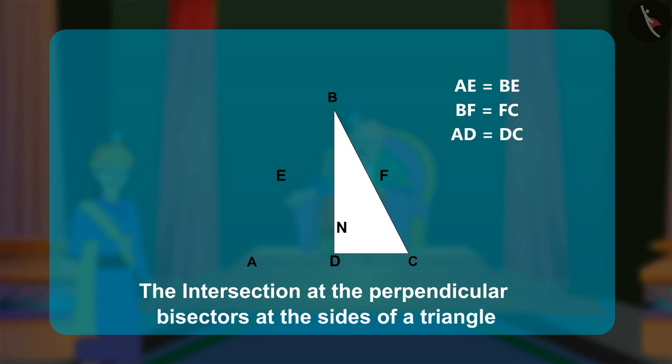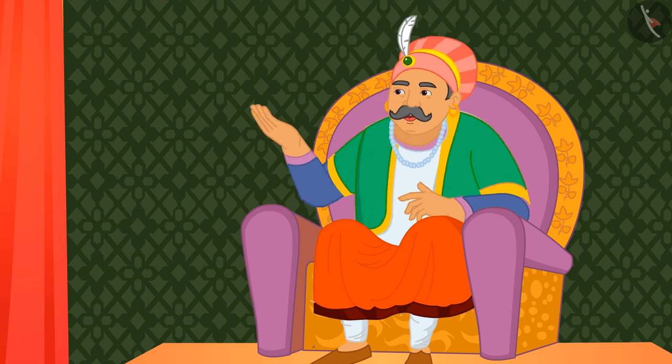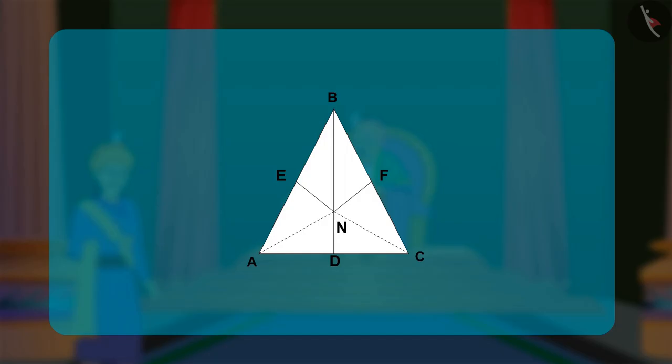He then folds the lines from that point to each vertex of the triangle. Akbar asked Birbal, what is the common point of intersection of these lines called? Birbal explained the three perpendicular bisectors of the sides of a triangle meet at a single point, called the circumcenter.